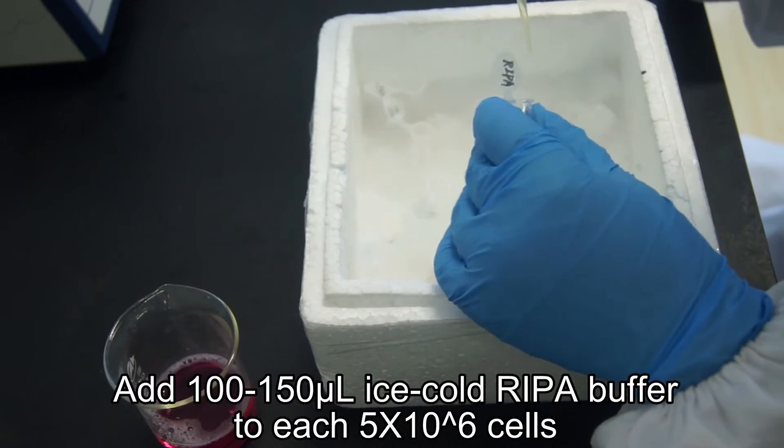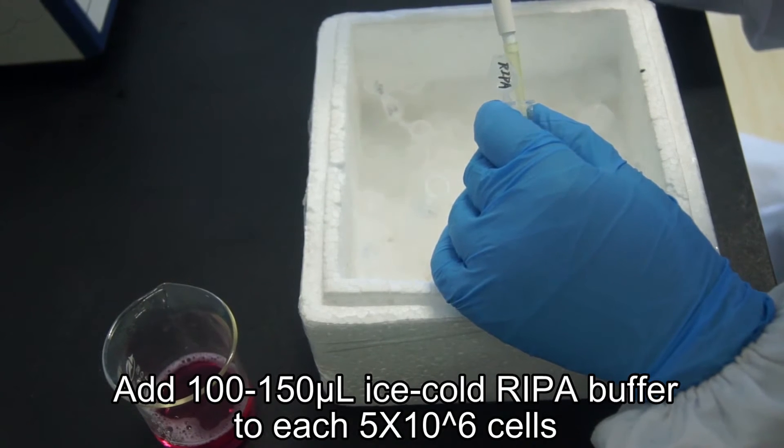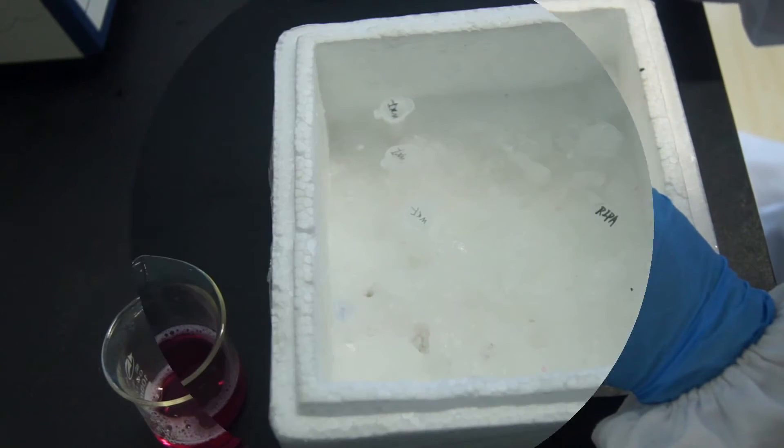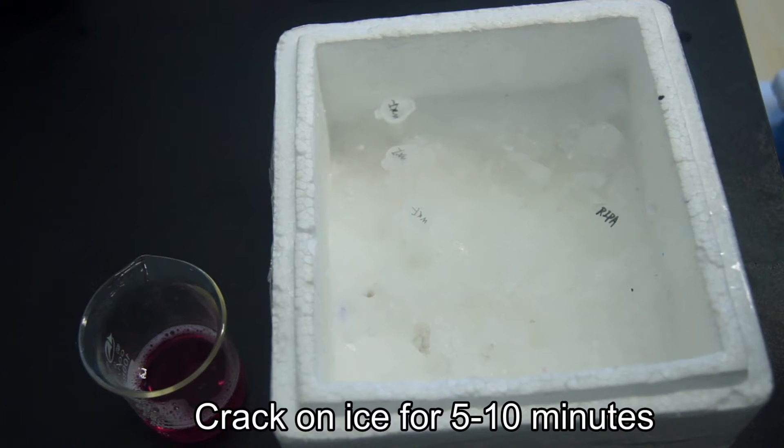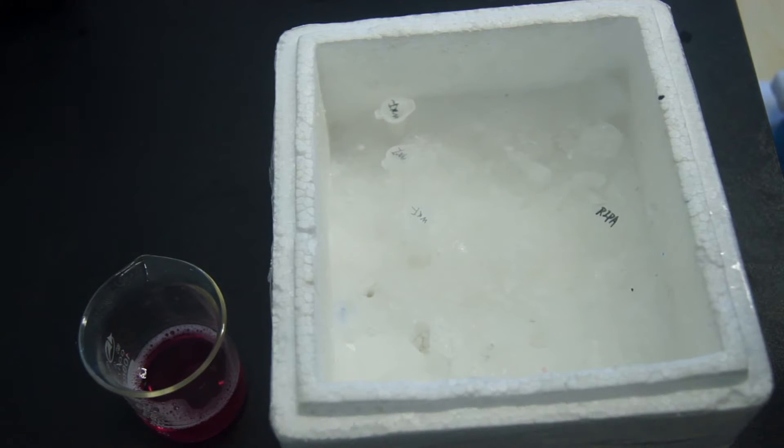Add 100 to 150 microliters of ice-cold REAPER lysis buffer for each 5 million cells. Then put the mixture on ice for 5 to 10 minutes and mix with a pipette.